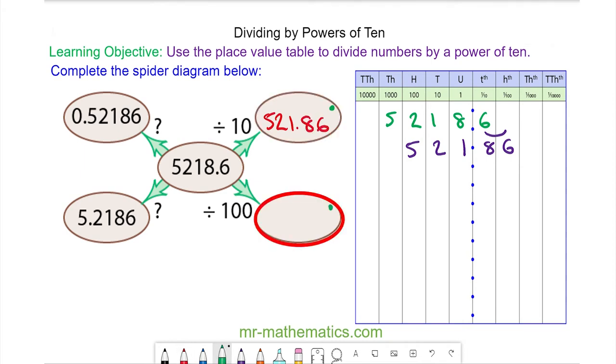For this value, we move every number to the right by two places, because of the two zeros in 100. So we have 52.186.